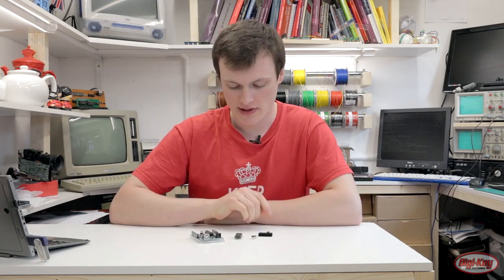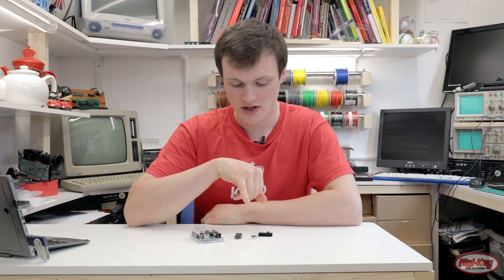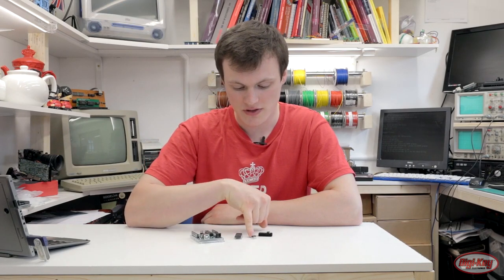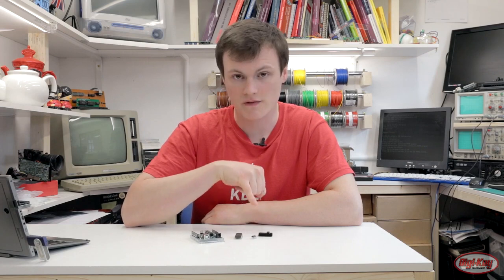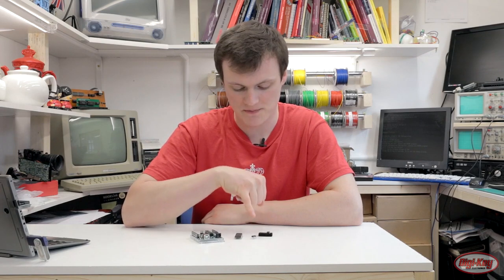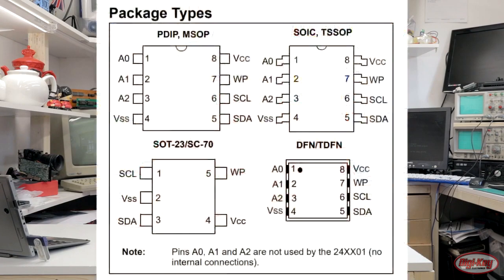In the previous video we looked at parallel memory and the relative advantages and disadvantages when compared to serial memory. Serial memory is physically smaller than parallel memory — interestingly the dies might actually be the same size — but in terms of physical packaging, serial memory chips are almost always very, very small.